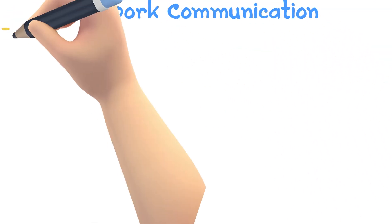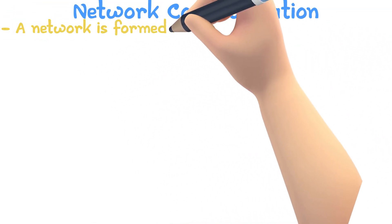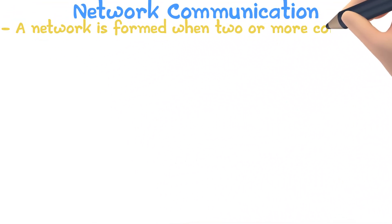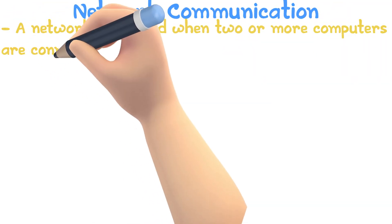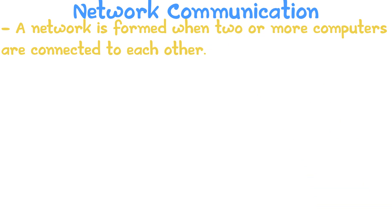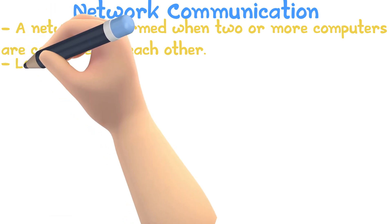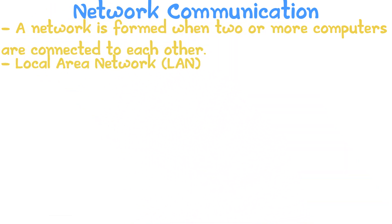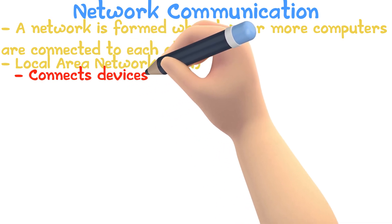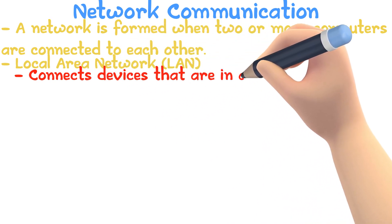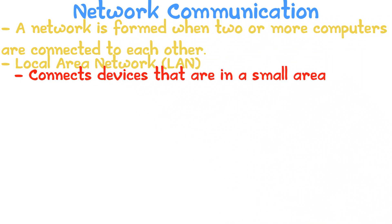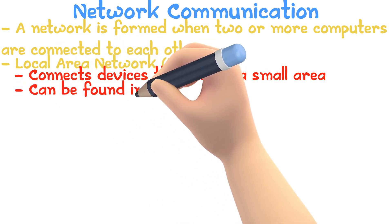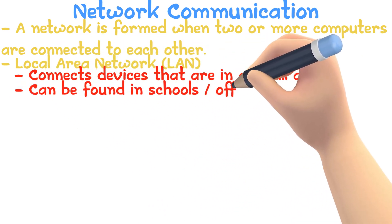A network is formed when two or more computers are connected to each other. In the modern world, there are four major types of networks. The Local Area Network connects devices that are in a small area. A LAN can be found in schools or office buildings.